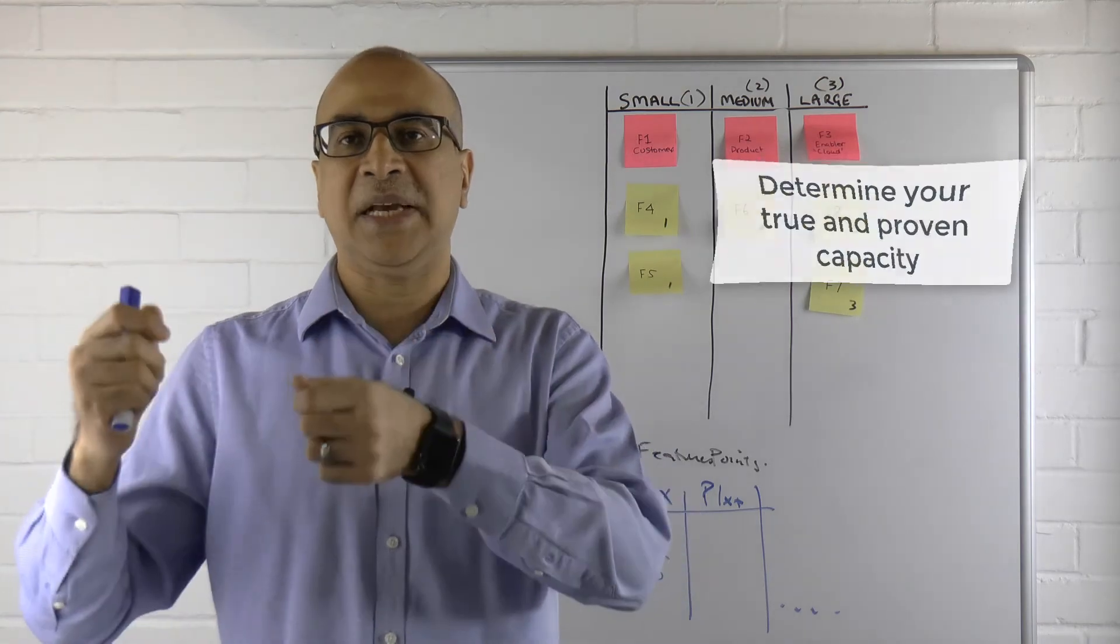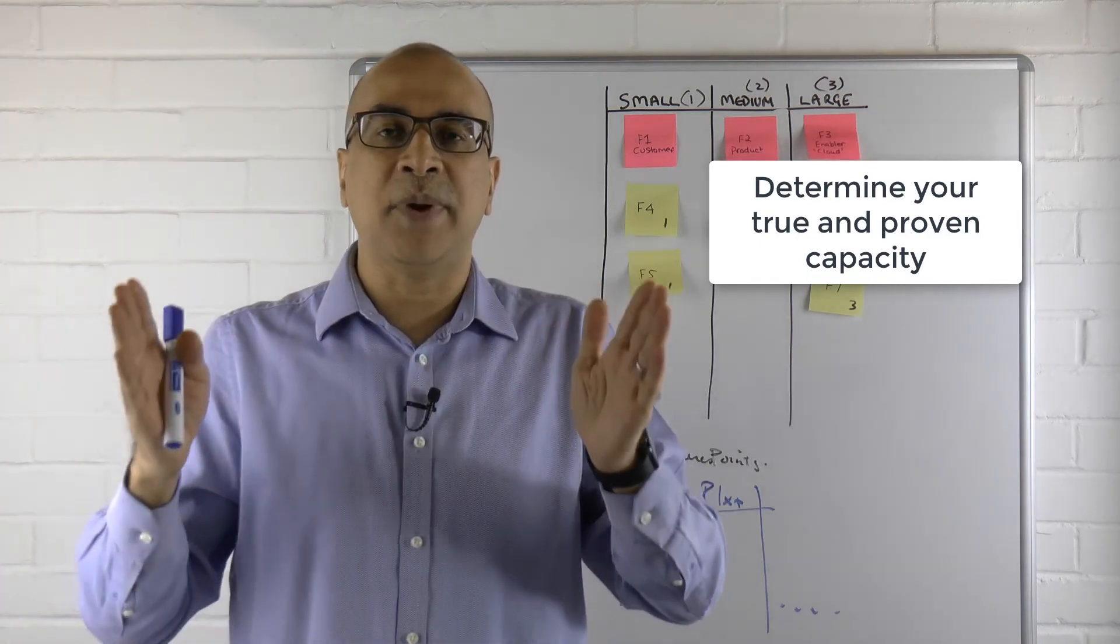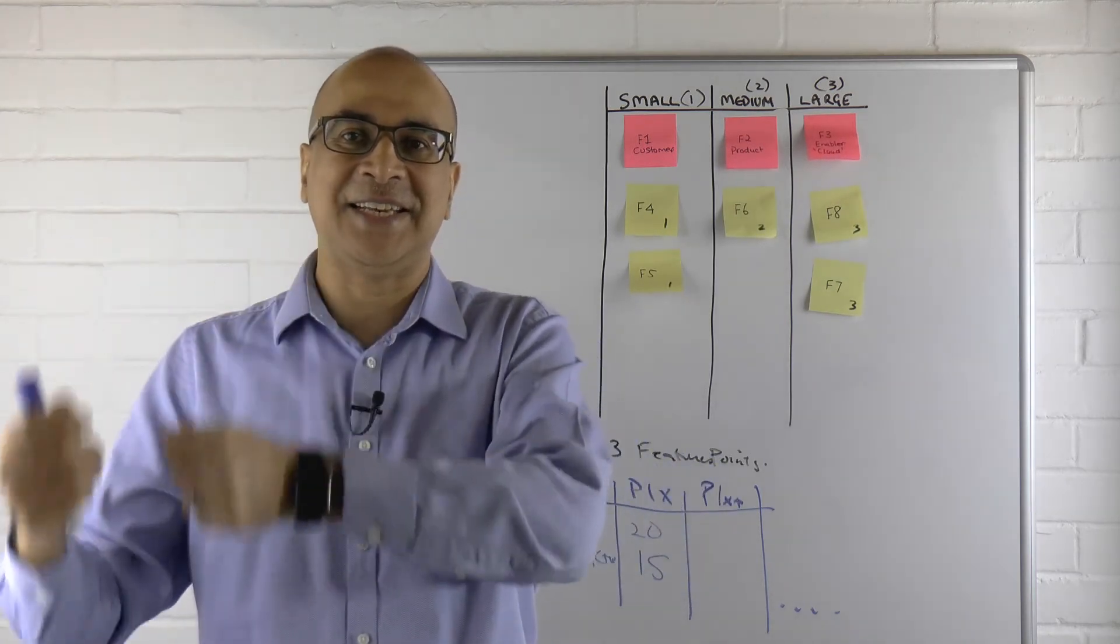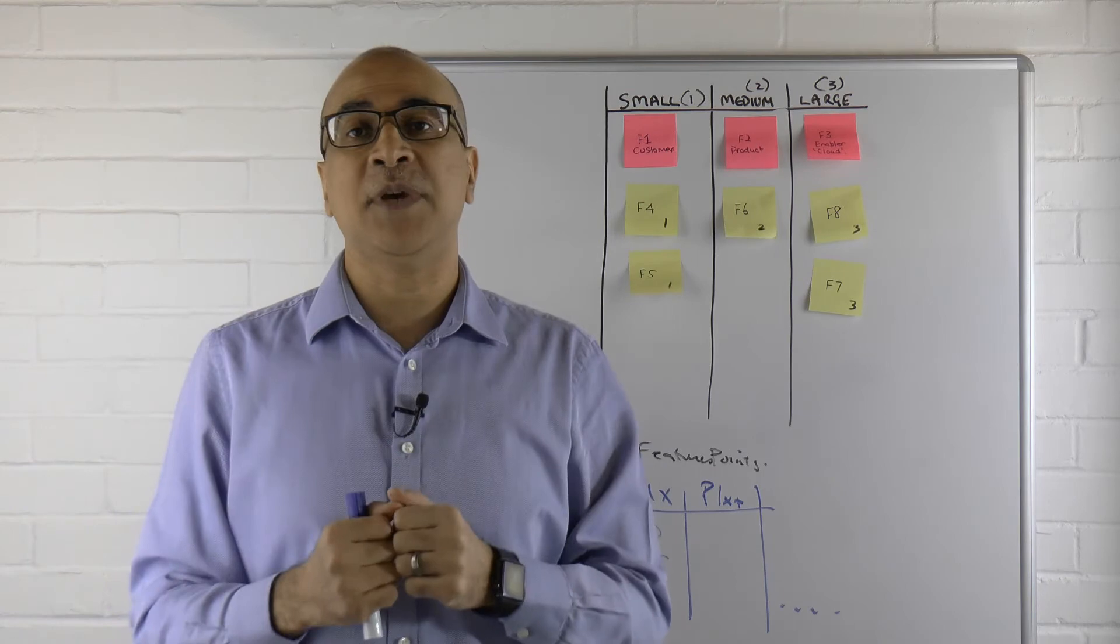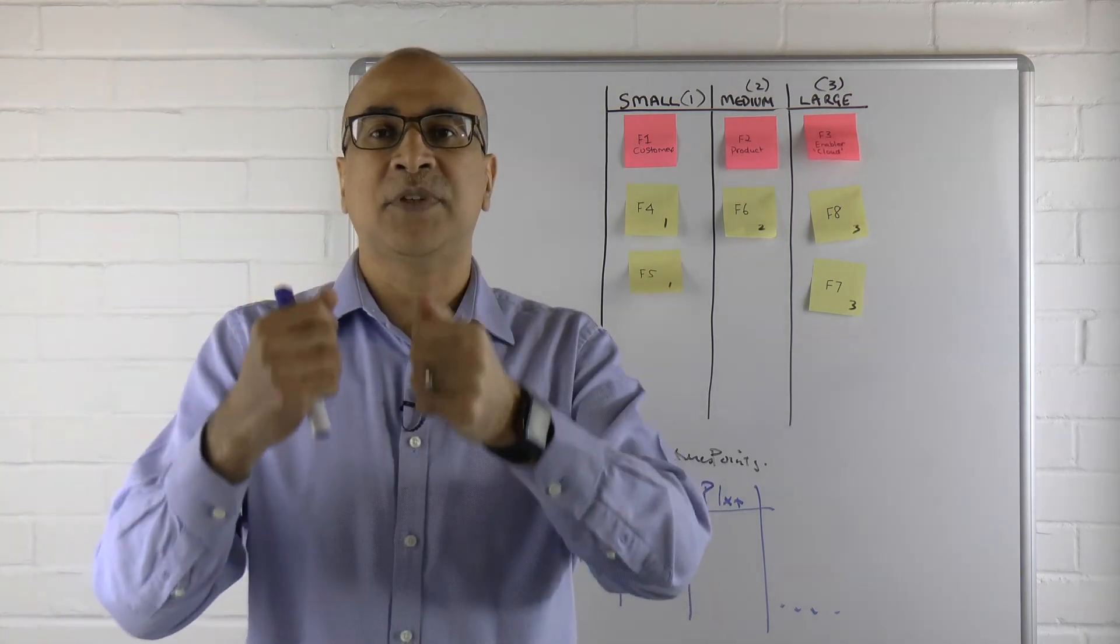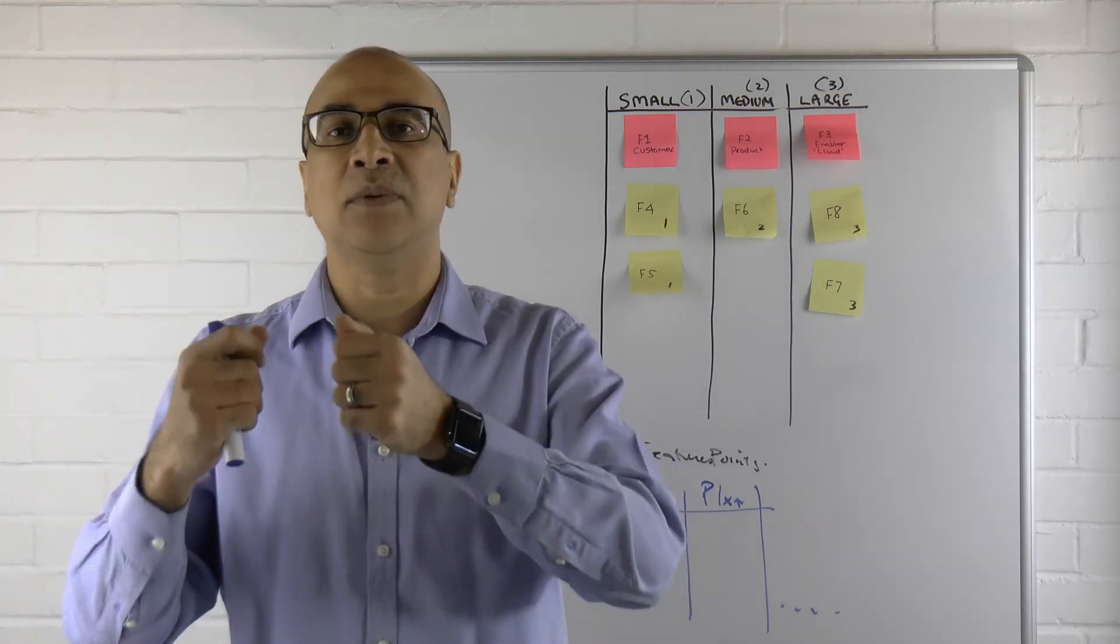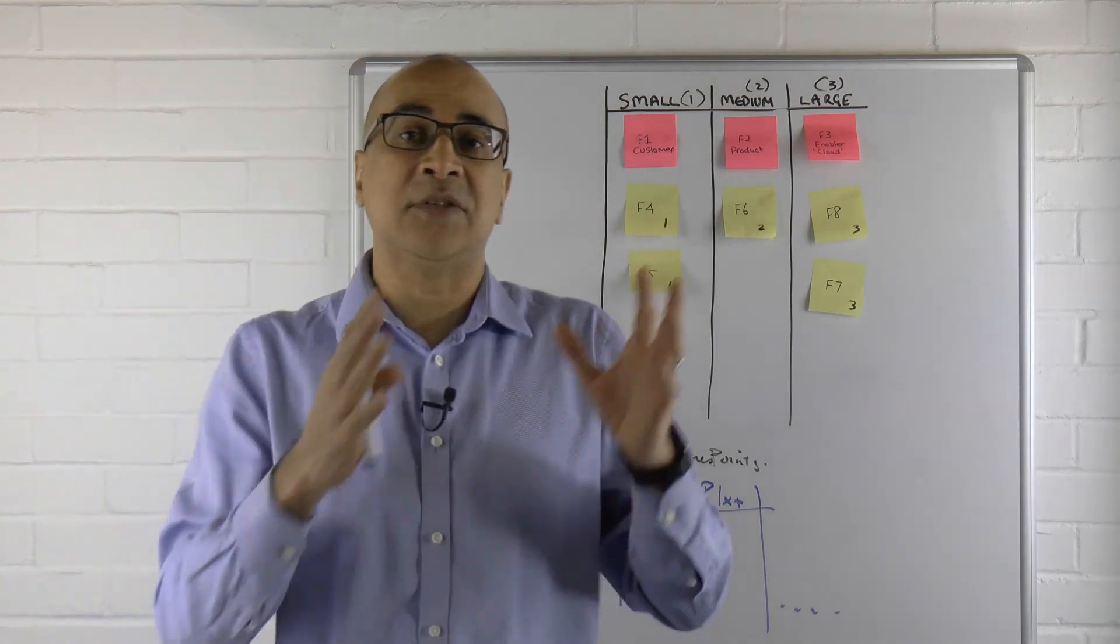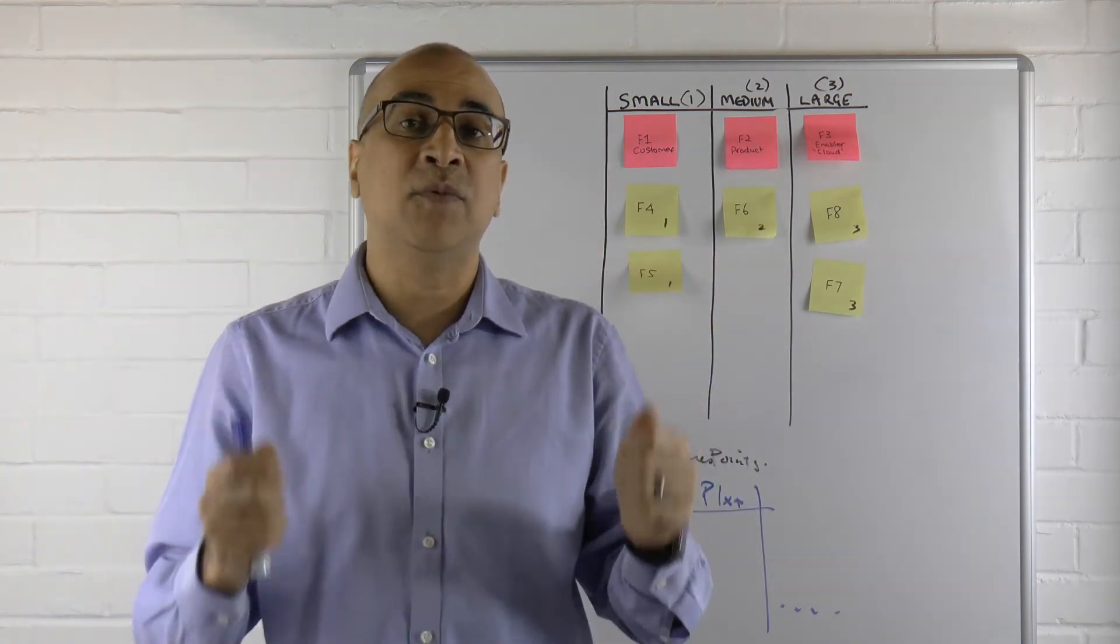For the next PI planning, now you know how many features you need to prepare for. That starts to build a rhythm of understanding of what your true capability and capacity actually is. You can start to make commitments that you can actually meet with the business because that's one of the biggest challenges we have where agile release trains, especially IT-related or focused agile release trains, make certain promises to the business or to the other functions or the key stakeholders that they can't necessarily meet or they can't actually deliver, or they're actually kidding themselves. This is a great way to keep yourself honest. It's using yesterday's weather. We know we've done it once before—good, bad, ugly, whatever our situation is—we've done it, we've proven it in this environment, and therefore we're likely to be able to do it again.